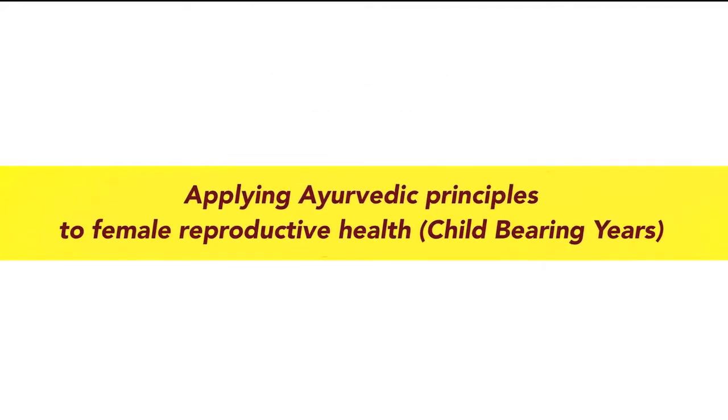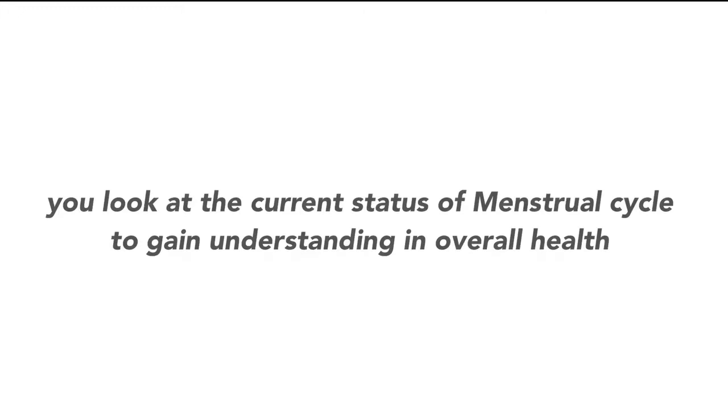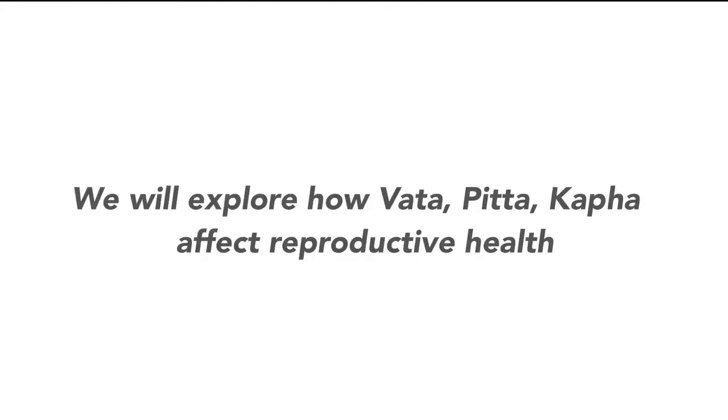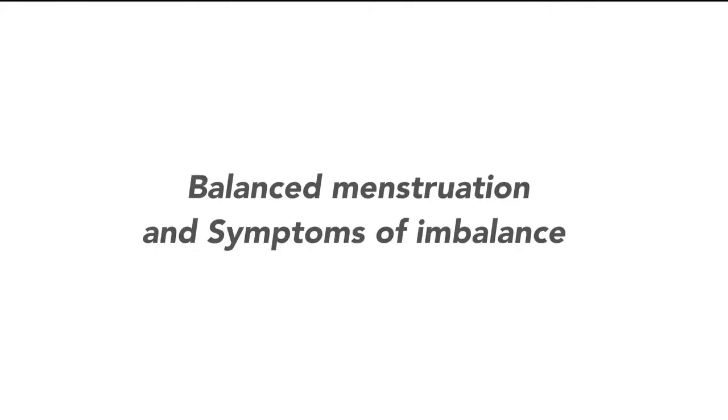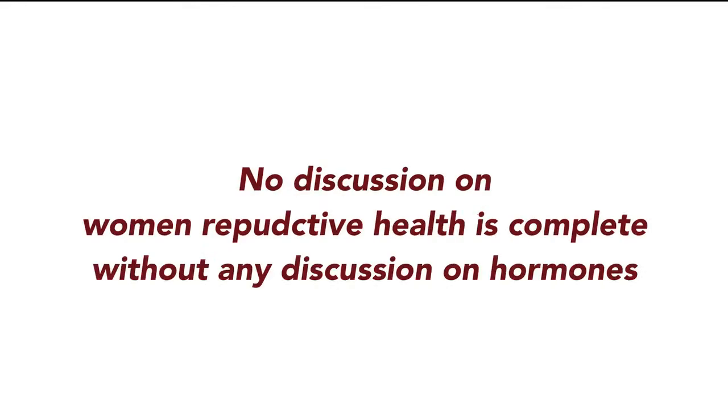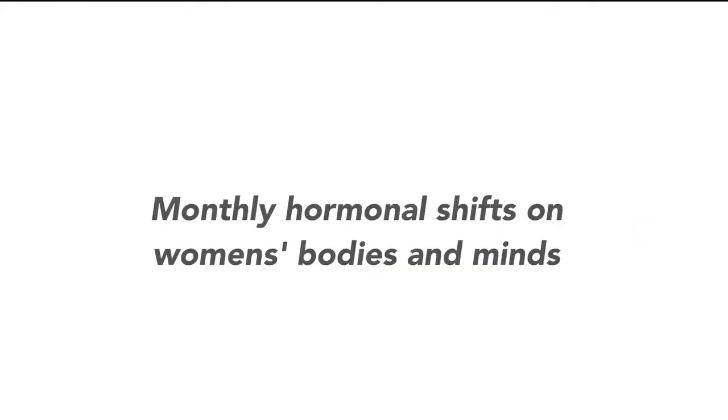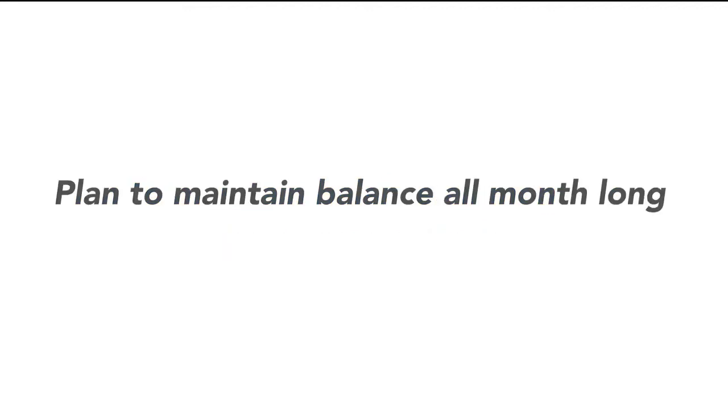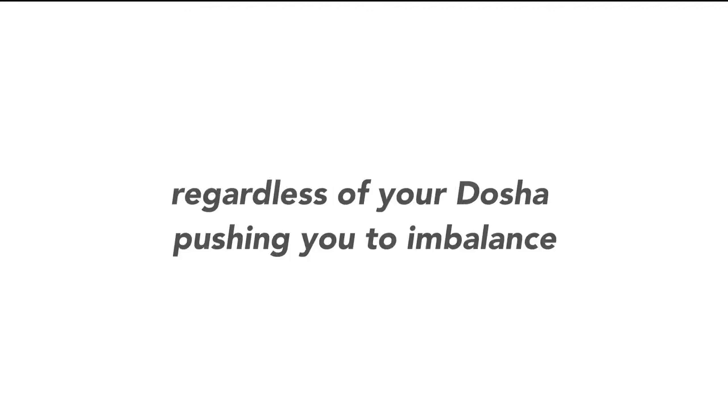Part two is titled, Applying Ayurvedic Principles to Female Reproductive Health During the Child-Bearing Years. You'll look at the current state of your menstrual cycle to gain understanding of your overall health. We'll identify the signs of reproductive health and how the quality of the datus, or tissues, of the body reflect our health. The doshas are forces that can impact these tissues, and we will explore how vata, pitta, and kapha affect reproductive health. We will then explore balanced menstruation and symptoms of imbalance by discussing the formation of the endometrial lining, the egg, the fats of the body, the hormones, and the debilitating effects of stress. No discussion on women's reproductive health is complete without a discussion on hormones, and we'll explore the effects of the monthly hormonal shifts on women's bodies and minds, as well as what causes hormonal imbalance, and how you can better manage your hormone levels. This section ends with a plan to maintain balance all month long, regardless of the dosha pushing you to imbalance.